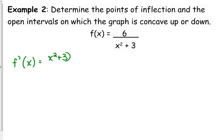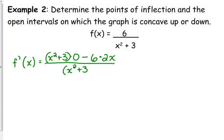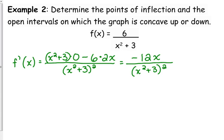Low d high, minus high d low — so we get 0 minus 6 times 2x, all over low squared. The numerator is just negative 12x, and we're still left with x squared plus 3 squared on the bottom.